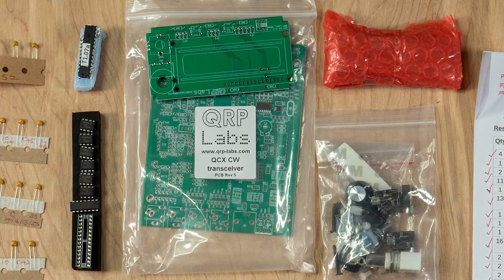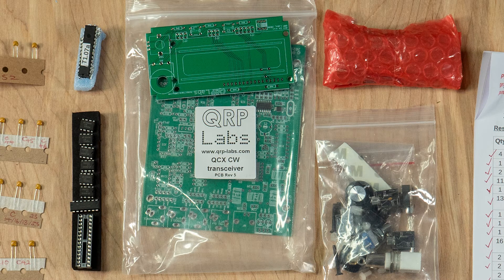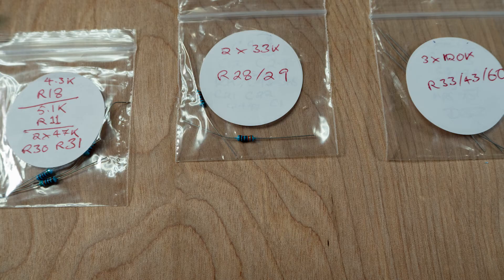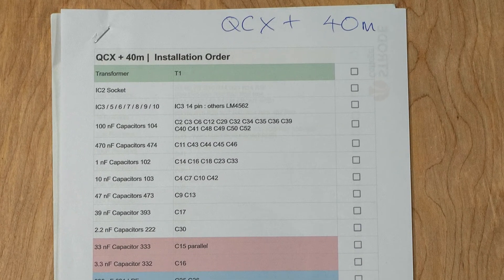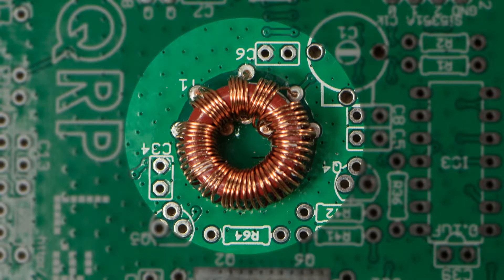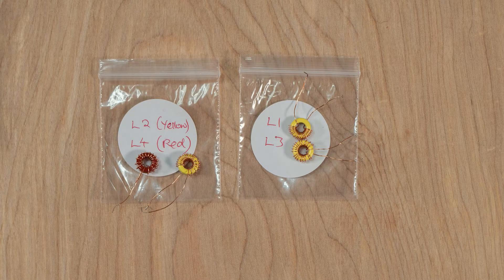In this video I'm going to start the build of the QCX plus kit and I'll run through how I get started systematically to make sure everything runs smoothly, and I'll look at how to make sure the toroid coils are wound and fitted correctly first time.